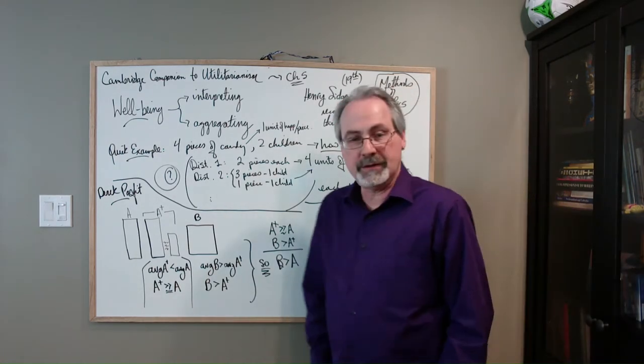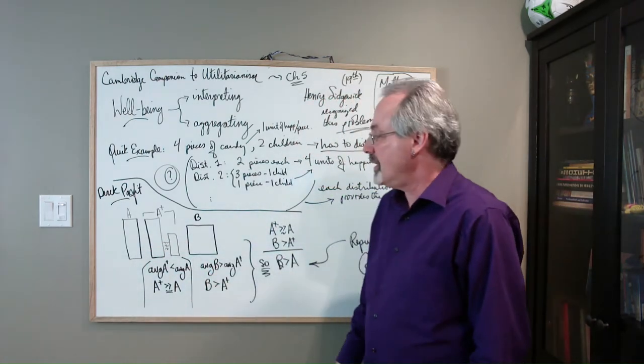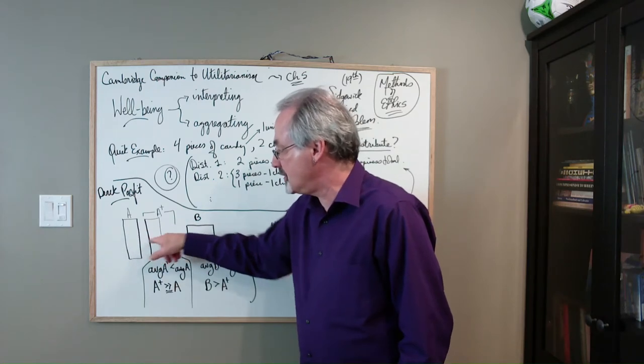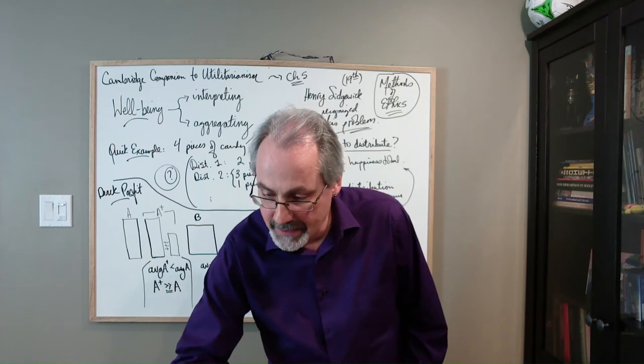You have three different communities, A, A plus and B. And so we symbolize that with this block. So these two blocks are the same size. And so A, A plus and B.